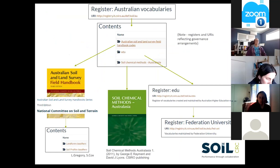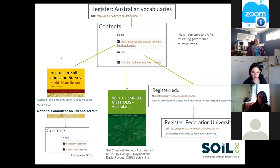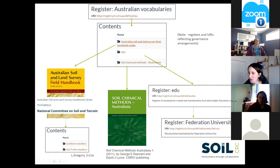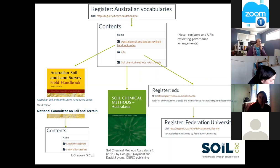You can see here the registers that have been created and collections made available to help describe soils data in the CSIRO Linked Data Registry. Simon and Linda Gregory have gotten up the Australian Soil and Land Survey Field Handbook - currently the landform classifiers and soil profile classifiers. There's also the soil chemical methods register. And there's a register created for Federation University - created and maintained by Australian higher education researchers. Note that the registers and URIs reflect the governance arrangements.